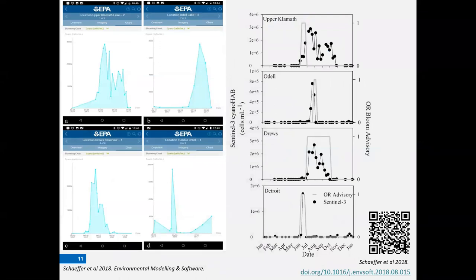Screenshots from the mobile app show weekly data as a time series for each pin location. We provide validation against approximately 25 state health advisories issued in 2017 across seven states — published last year in Environmental Modeling and Software. For four pin locations, weekly data were compared to the timing and duration of health advisories that were issued, shown as superimposed gray lines.